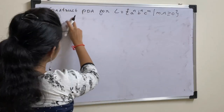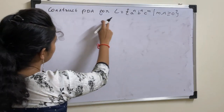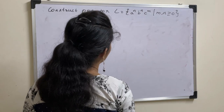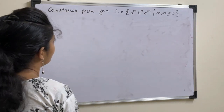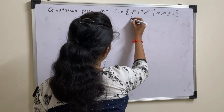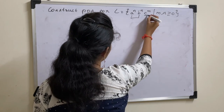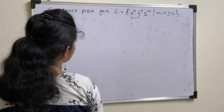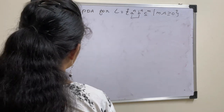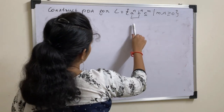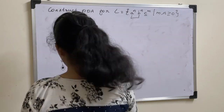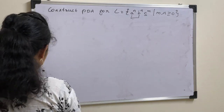So let us now solve this problem. The given language is A^M B^M C^N, which means we have equal number of A's and B's whereas the number of C's can be anything. We already solved this kind of problem before, so let us solve it for this example.